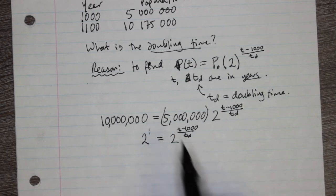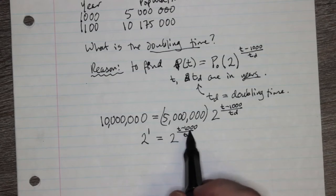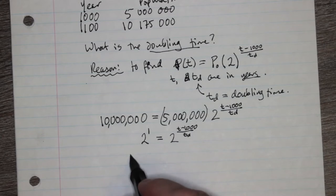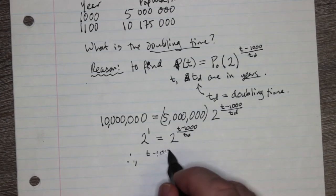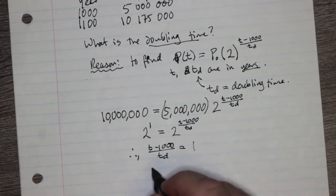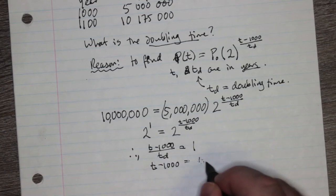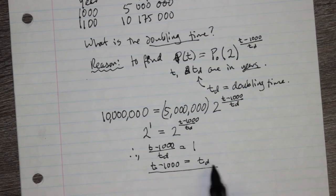Well look, this is 2 to the 1. So it would appear as though t minus 1,000 over td, that this fraction is equal to 1. So we can say then that t minus 1,000 over td is equal to 1. Well, what does that tell us? That tells us that t minus 1,000 equals td. It equals the doubling time.